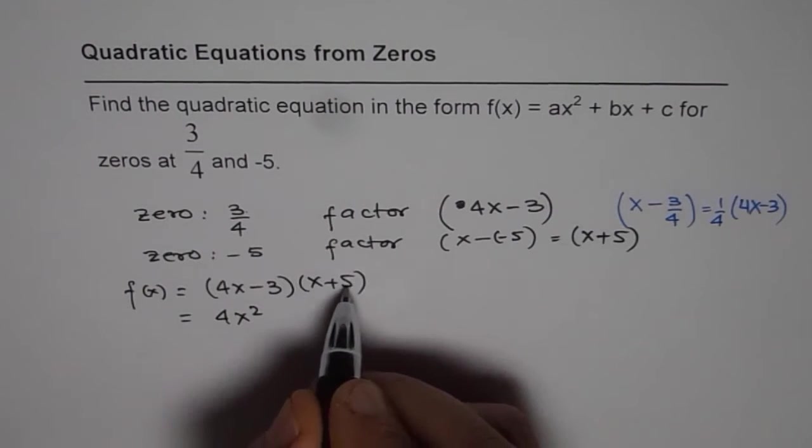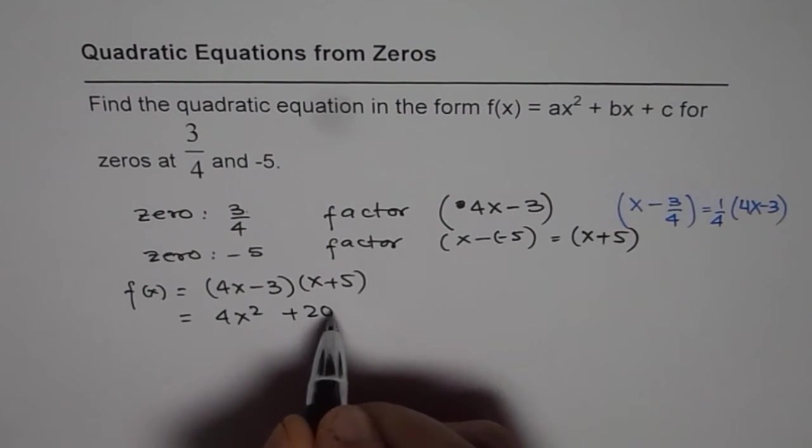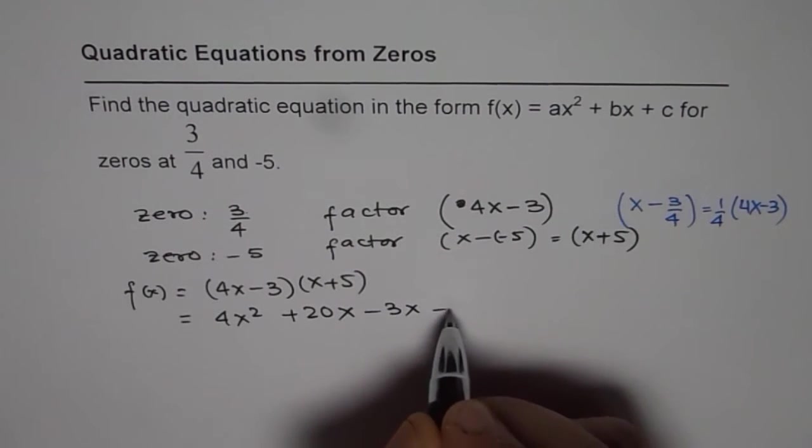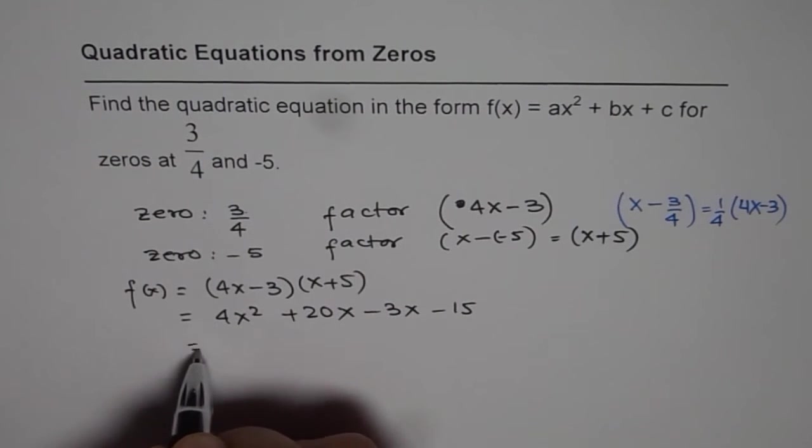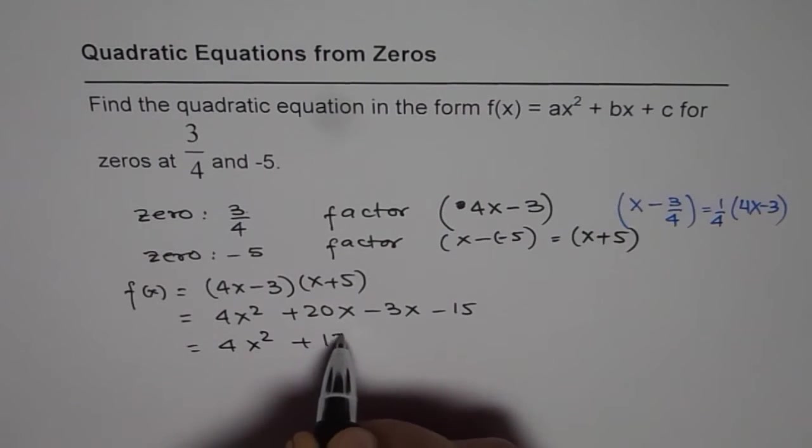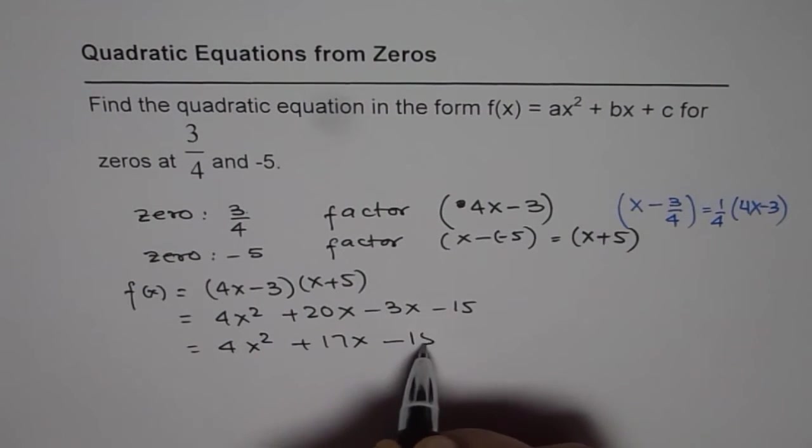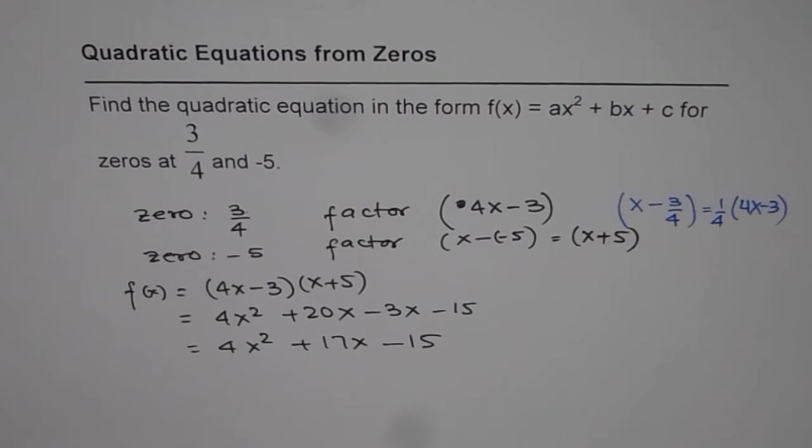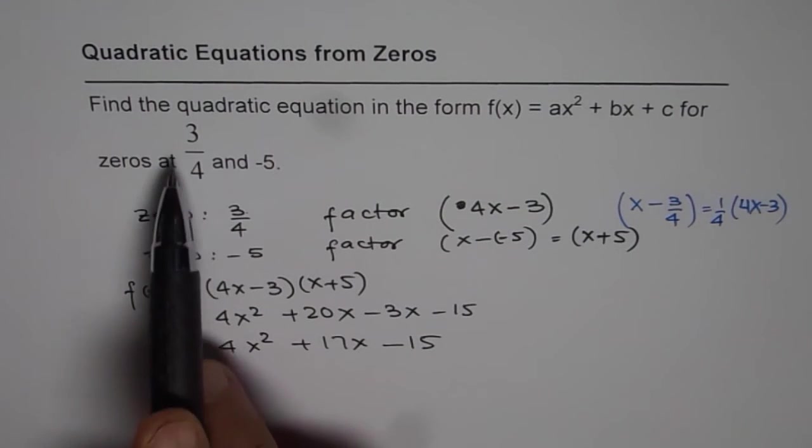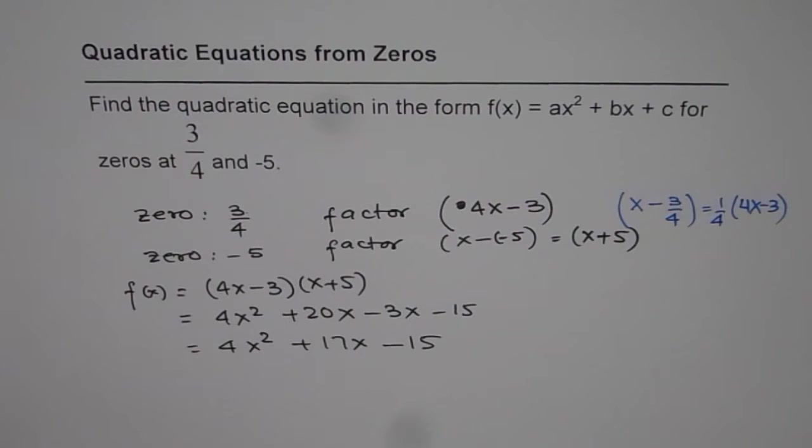So we get 4x², 4 times 5 is 20, so 20x - 3x and -15. Let's combine the like terms: 4x² + 17x - 15. So that becomes the quadratic function for which we will have two zeros, one at 3/4 and the other at -5.